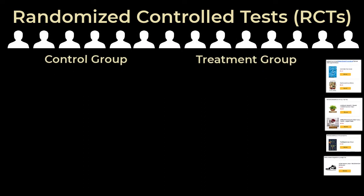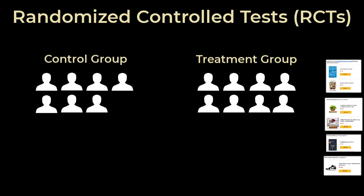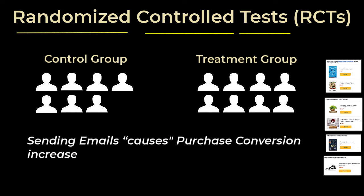Let's break down the phrase 'a randomized controlled test.' We're selecting users at random to be a part of the control group and the treatment group. This is because the only difference we want between these two groups is just the fact that one receives emails and the other does not. If we control the effects of other variables through randomization, we can then be confident that if the experiment says that sending email increases purchase conversion, then it is almost certainly true that sending emails indeed causes a purchase conversion increase. That's why randomized control tests are so important — they can also be used for inferring causality.